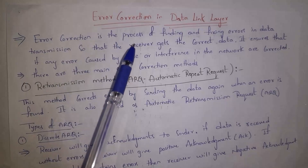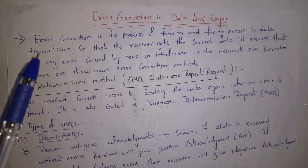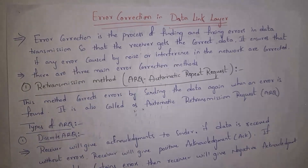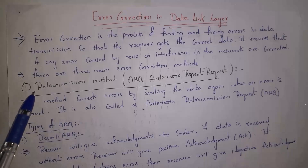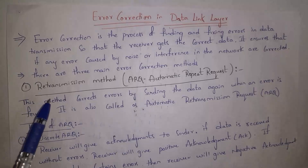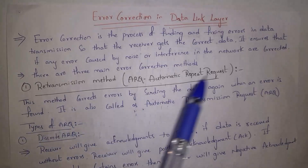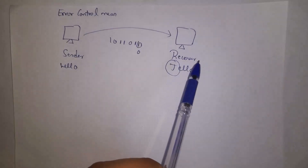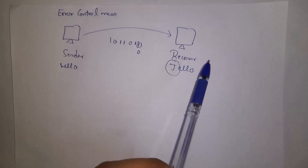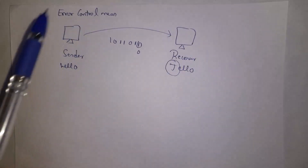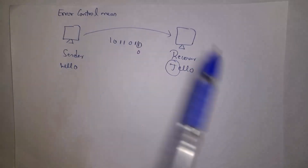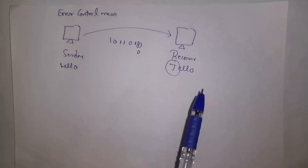Error control ensures that if any errors caused by noise or interference in the network are corrected, so that the receiver gets the correct data. Error correction methods are mainly classified into three types. The first one is the retransmission method, also called the ARQ method — ARQ stands for Automatic Repeat Request. Whenever the receiver receives an error in the data, it asks the sender to retransmit that same data again.